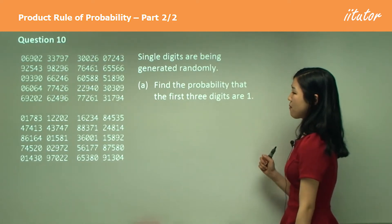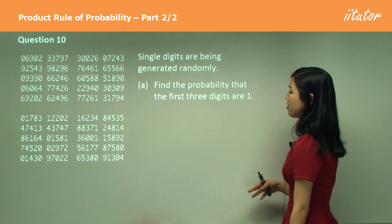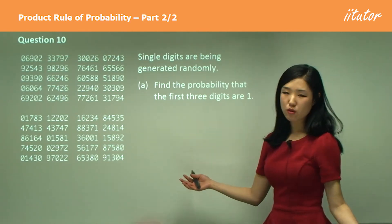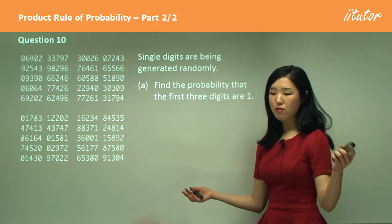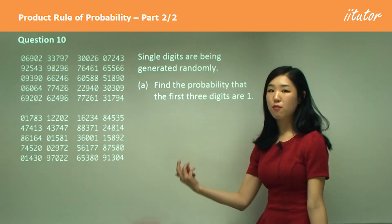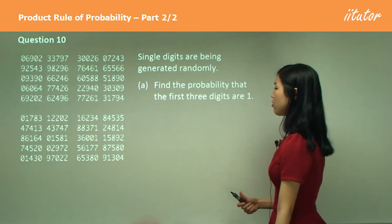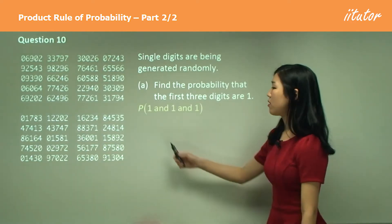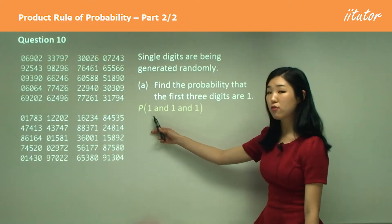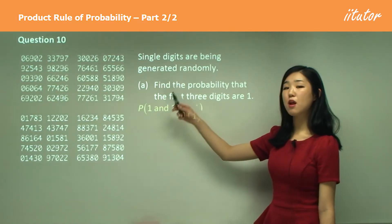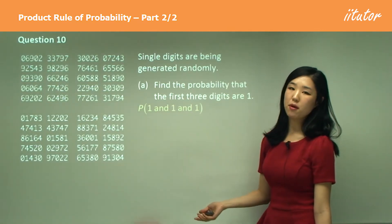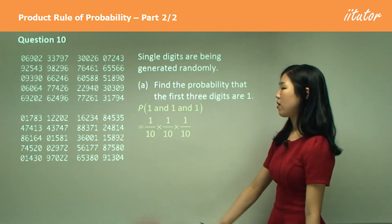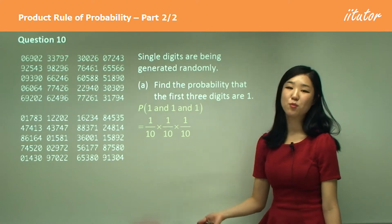In Part A, I want to find the probability that the first three digits are one. How many numbers can we choose from? We can start from one, two, three, four, five, six, seven, eight, nine, and zero — there are 10 numbers we can choose from. We want the probability of having one for the first number, one for the second, and one again for the third. The probability of getting one is just one out of ten, so it's simply one-tenth times one-tenth times one-tenth.